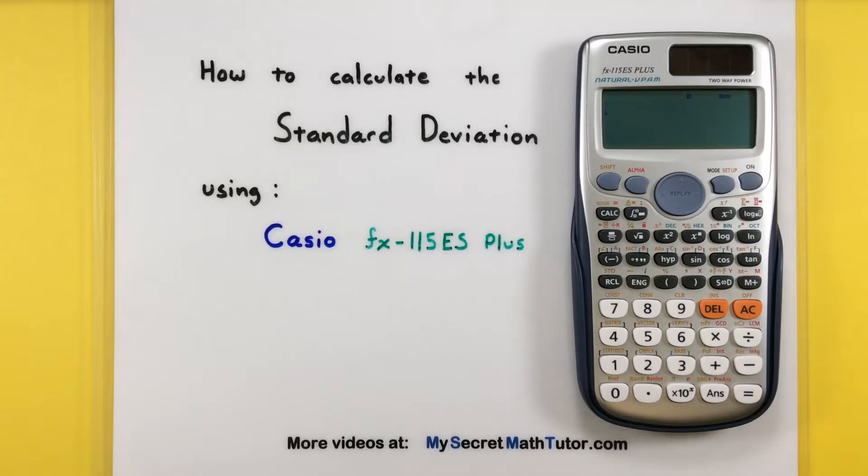the Casio FX-115ES Plus. Now there's really only two steps to calculating the standard deviation using this calculator, and that's getting all the data into the calculator, and then finding the right buttons to actually have it do the calculation.